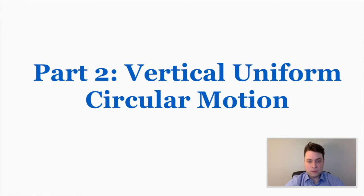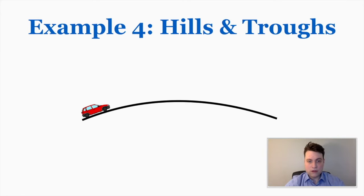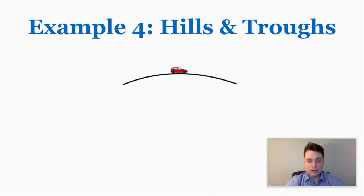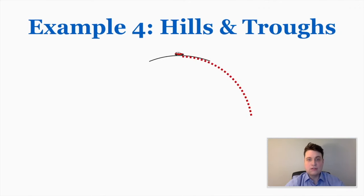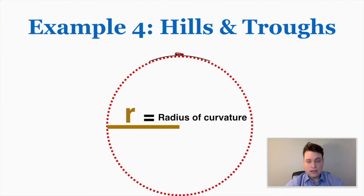Now for vertical uniform circular motion — two problems left. A really common example is a hill and a trough. A car going over a hill is an example of circular motion if we consider the hill to be part of a massive circle. The car isn't going around the full circle, but as long as it's on part of the circle at constant velocity, it's technically in circular motion. The radius of this imaginary full circle is called the radius of curvature.